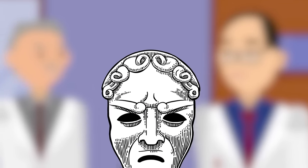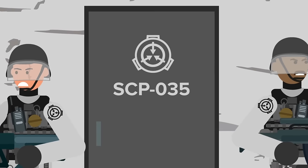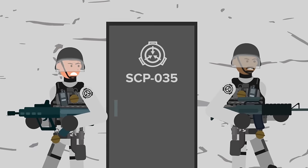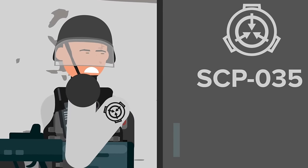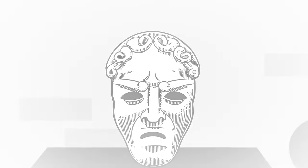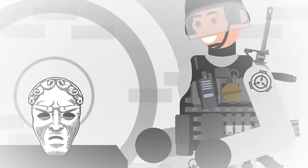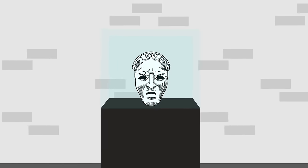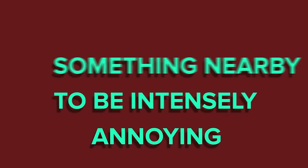Meanwhile, locked up tight in a hermetically sealed glass case was another anomalous mask. SCP-035 was kept under lock and key by the Foundation, guarded constantly by a pair of armed security officers. Officer Riegert had noticed something strange about the infamous possessive mask today. It seemed restless, almost agitated, like it found something nearby to be intensely annoying.